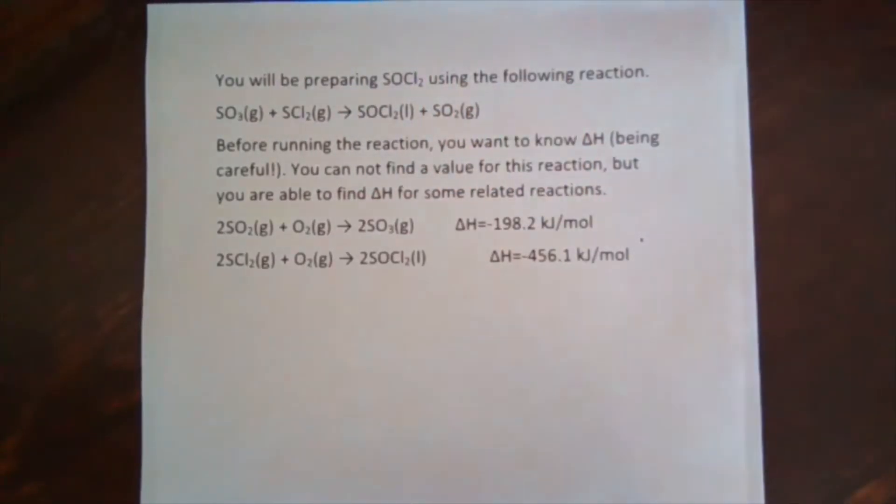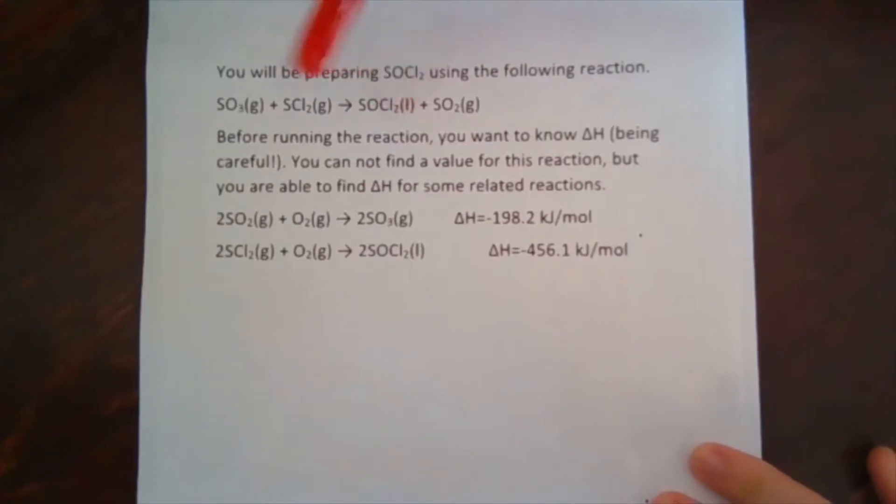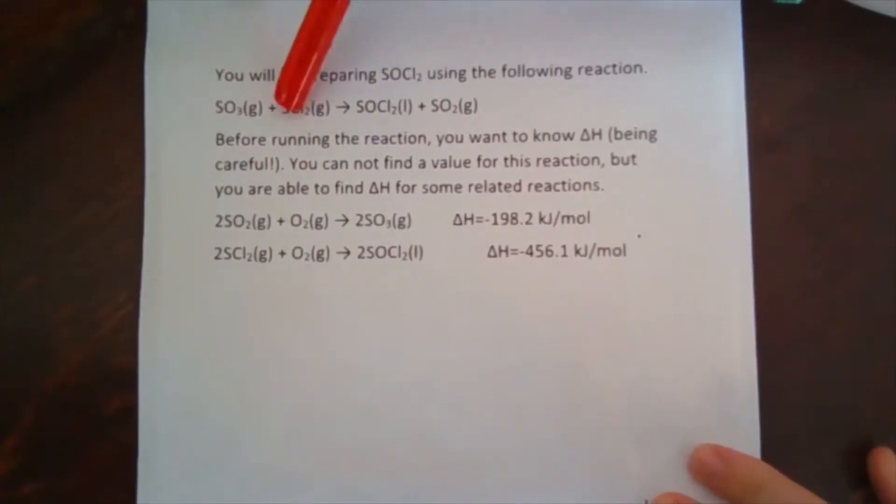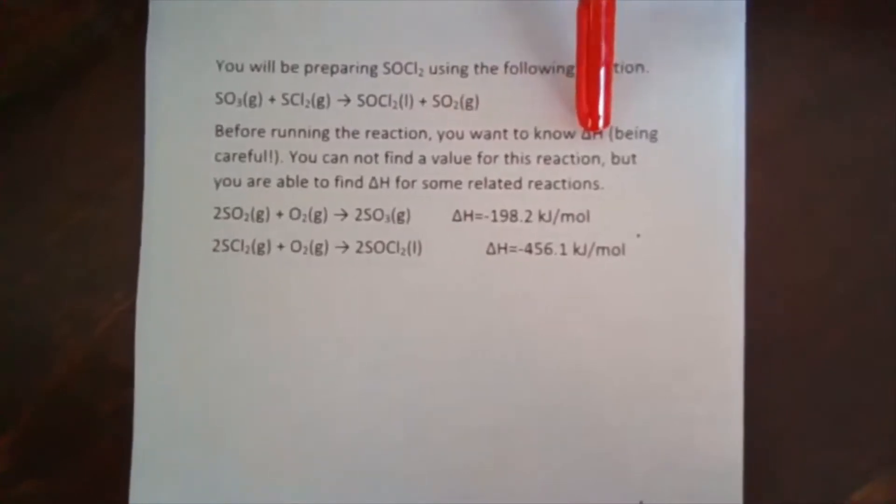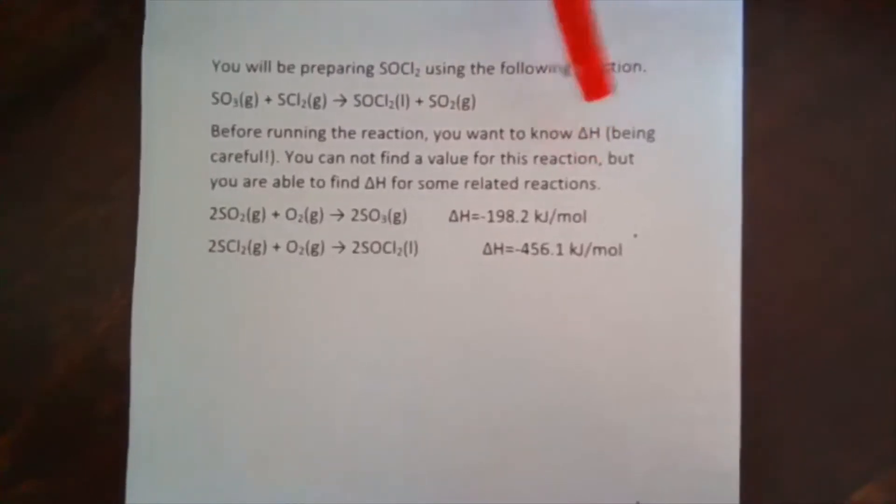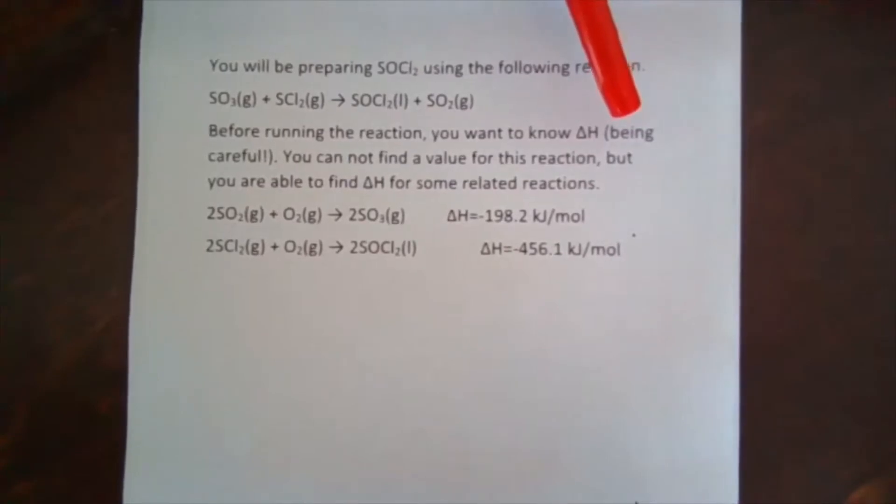So this is a real life why we use Hess's Law in the chemistry lab. You're going to do this reaction. You want to make SOCl2 and you're going to run this reaction. You're going to react SO3 and SCl2 and you're going to make this as your product. You'll have another product there as well. And so you want to know delta H, and the reason why you want to know delta H, that is your enthalpy. That is going to correspond to let you know, is this reaction going to get hot? Is this reaction going to get cold? Is this thing exothermic, endothermic?